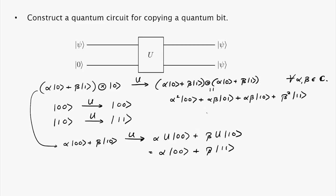So the only way that these two could be equal is if alpha equal to one or if beta equal to one. So we have a contradiction. So we can't possibly clone an unknown quantum state.